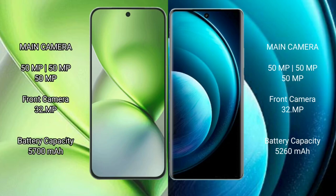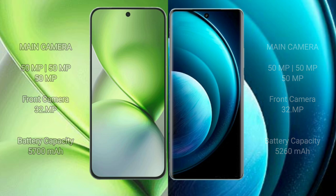Vivo X200 Pro Mini features a triple rear camera setup with 50MP, 50MP, and 50MP sensors, and a 32MP front camera, with a 5700mAh battery and 90W fast charging support. Vivo X100 Pro features a 5200mAh battery with 100W fast charging support.